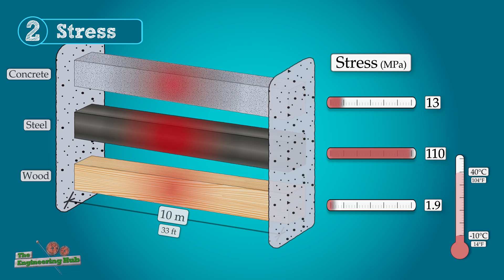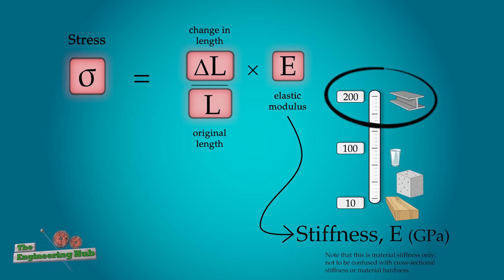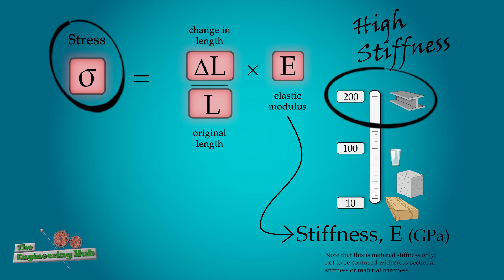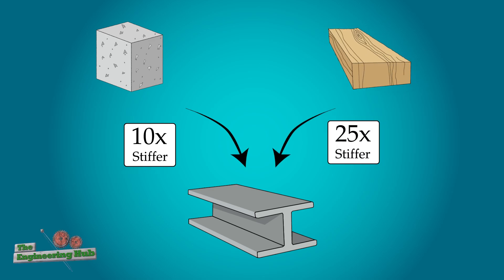The amount of internal stress will be different for each beam too. The stress is much higher in the steel because steel is very stiff, so that means even a small amount of strain or deformation could correspond to a very large force. Steel is about 10 times stiffer than concrete and about 25 times stiffer than wood.